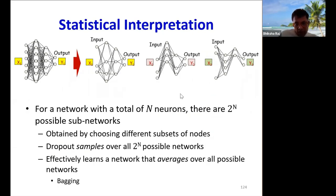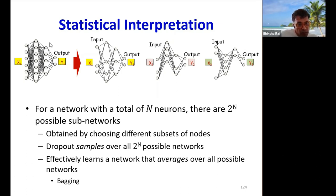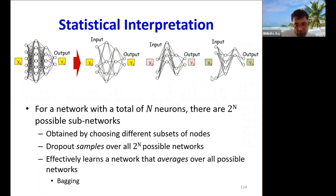The statistical motivation generally offered to justify dropout is that it's a form of bagging. For a network with N neurons, each neuron can be switched on or off, giving 2 raised to N possible networks. Dropout samples over these 2^N possible networks — the network seen by each input is one of them. These 2^N networks are not all independent but share parameters, and the final network we learn effectively averages over all 2^N possible networks, giving the benefits of bagging.